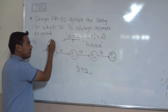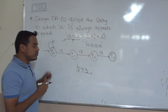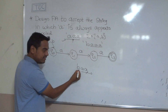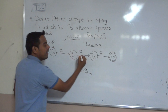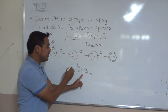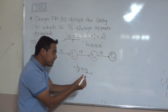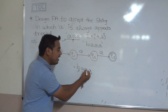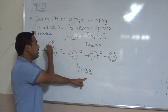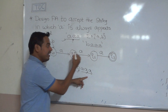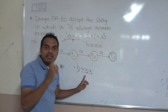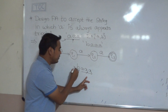If we provide input B at Q0 as a self-transition, then for the string B-A-A it cannot reach the final state, so it is not accepted. But for the string B-A-A-A with three consecutive A's, it is accepted by the finite automata because it consists of three consecutive A's.